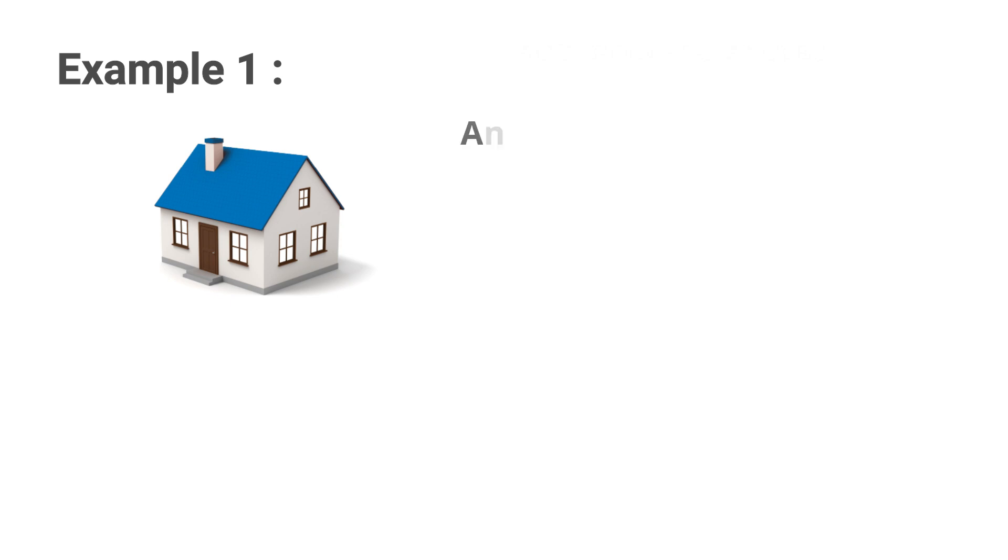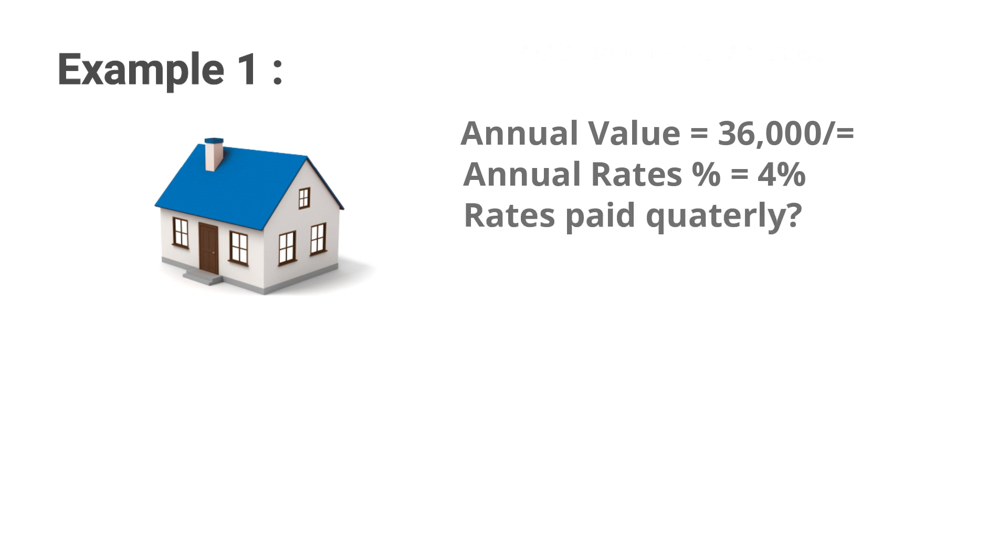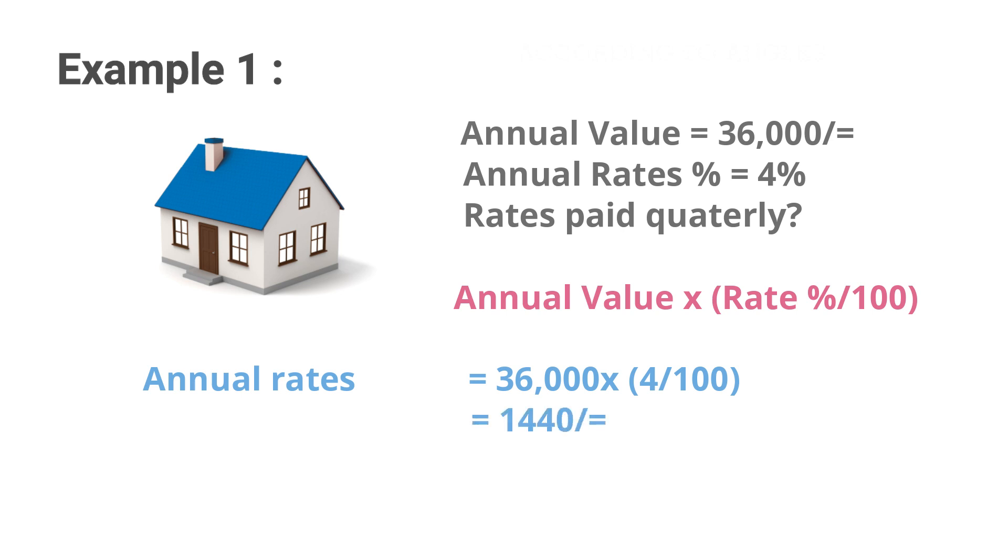The annual value of a house is assessed as 36,000 rupees. The annual rate percentage is 4 percent. We need to find the rates paid quarterly. First we get the annual rates charged, that is 36,000 into 4 over 100, which is equal to 1,440 rupees. Since we need to find the quarterly payment, we divide 1,440 rupees by 4 to obtain 360 rupees.